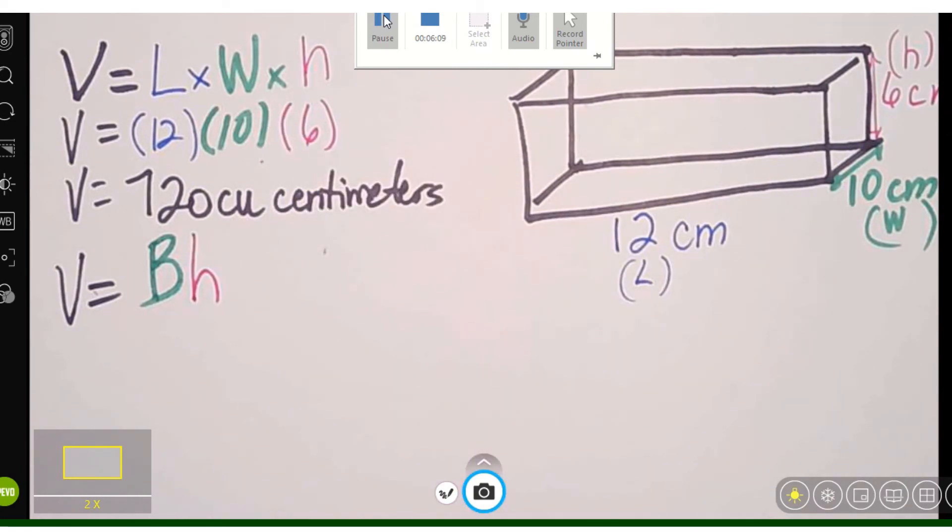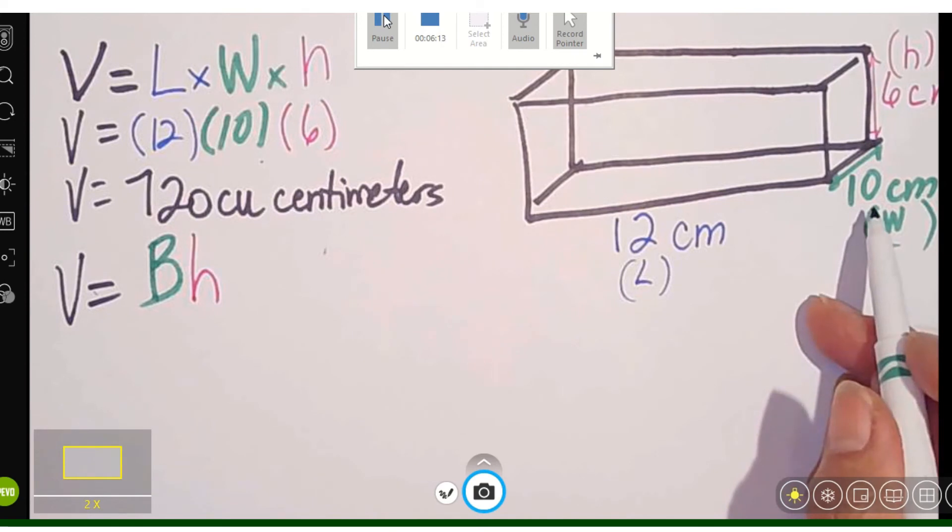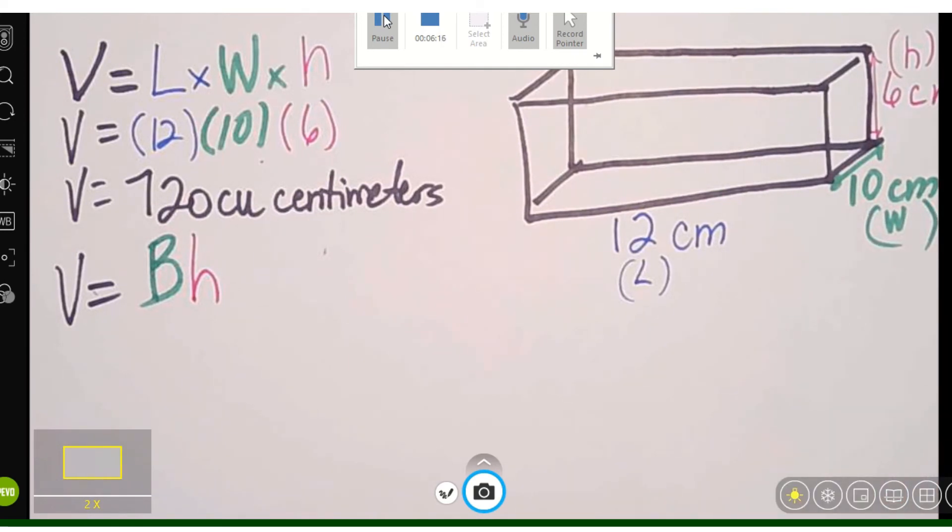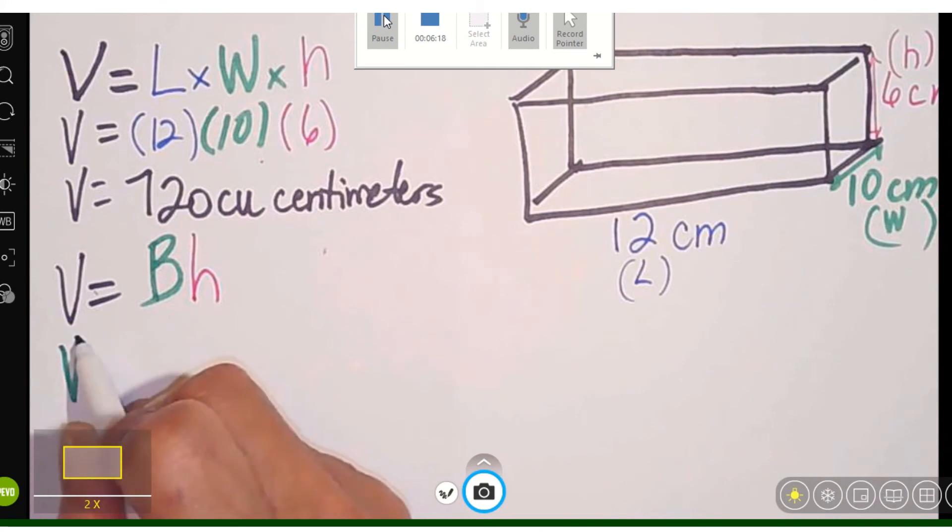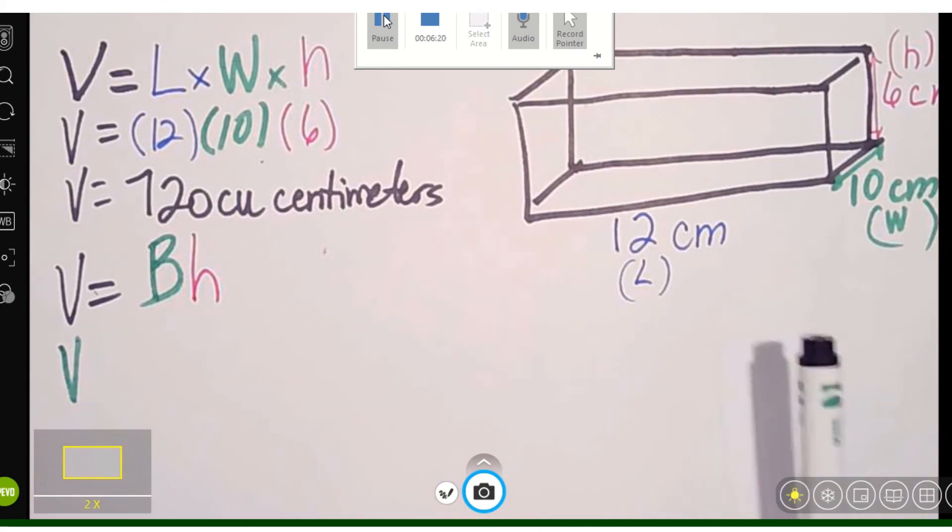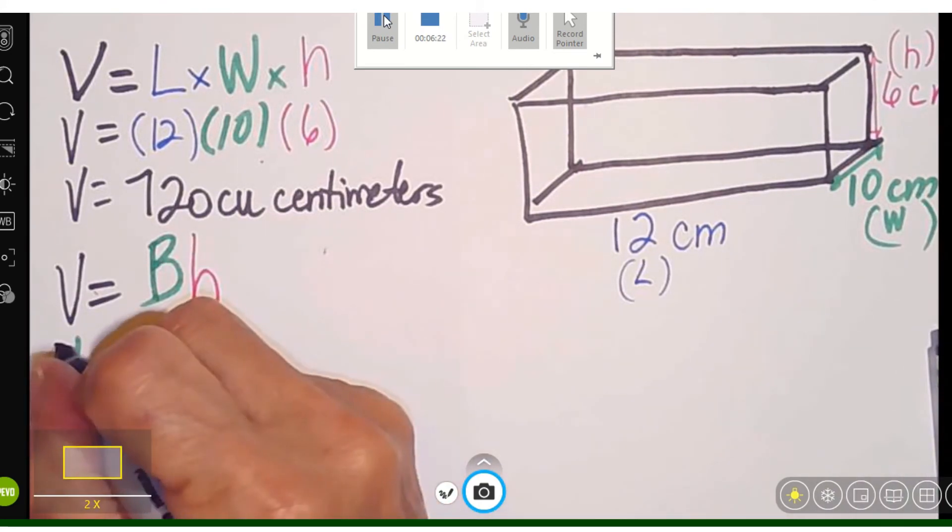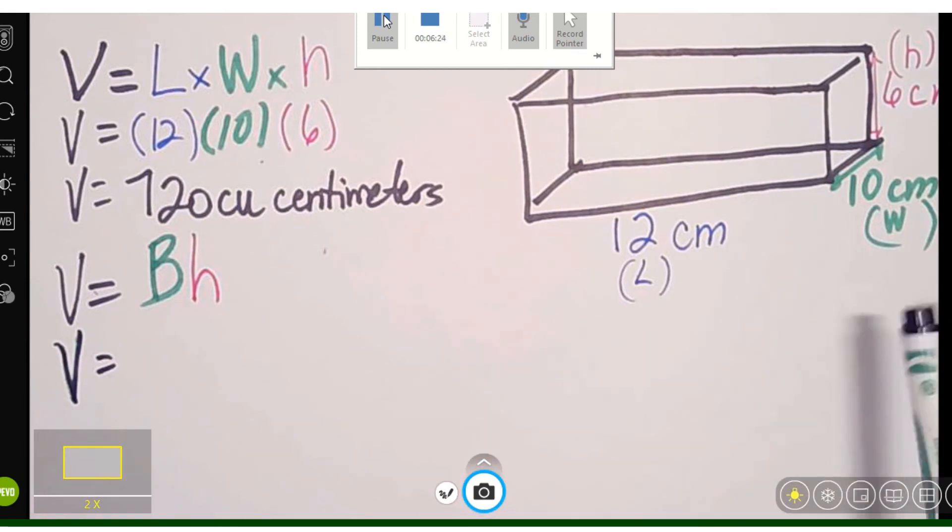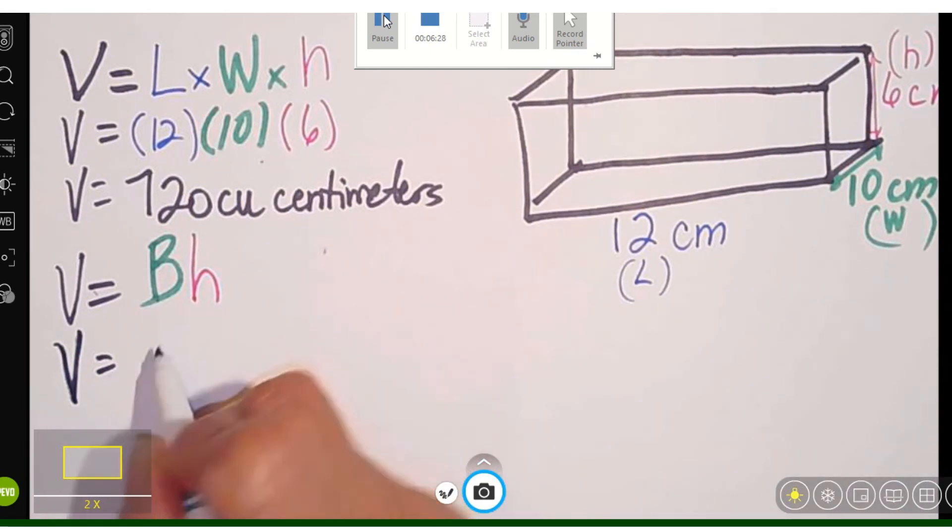Now one thing that you have to remember when you're doing the base is you have two bases. Okay, so we're going to go volume equals... I have two bases, don't I? So I'm going to multiply these two bases.